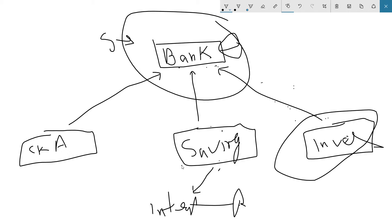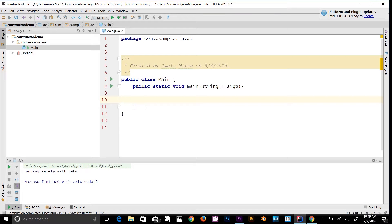When learning object-oriented programming, polymorphism is a concept many people say they technically understand but don't know where to use. That's okay — most of your classes won't need it. We don't have to go looking for polymorphism situations; they occur naturally, and understanding the basic idea is enough for us to move forward.